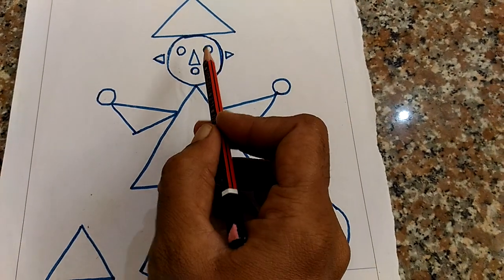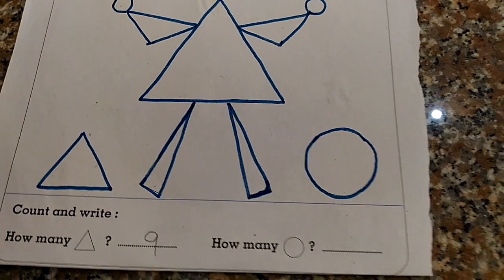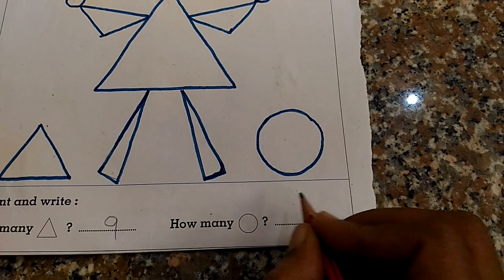1, 2, 3, 4, 5, 6. 6 circles. 1, 2, 3, 4, 5, 6.